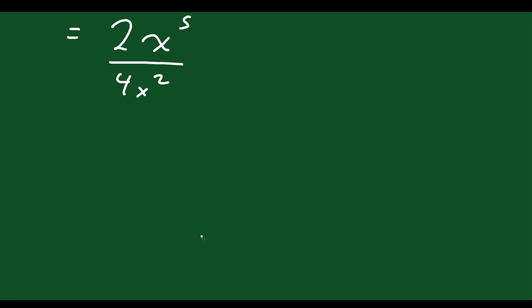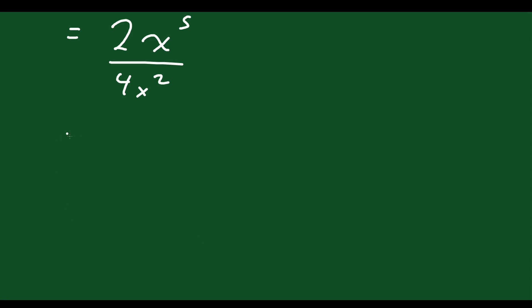Okay, so what can I do with this? I'm almost done. All I have to do now is simplify what I have. So 2 over 4, that reduces to 1 over 2, so you can put a 2 on the bottom.